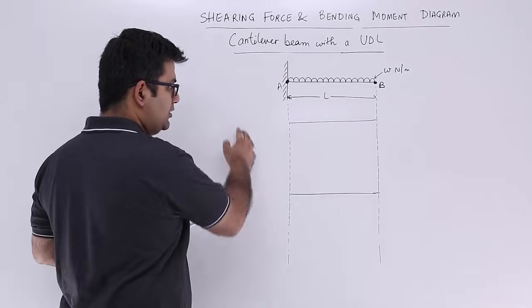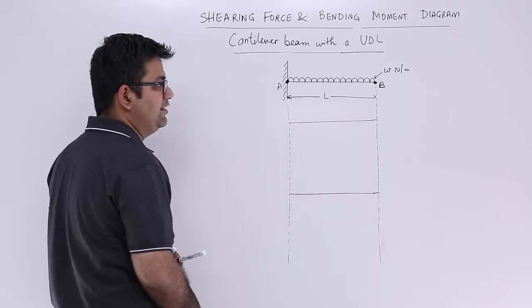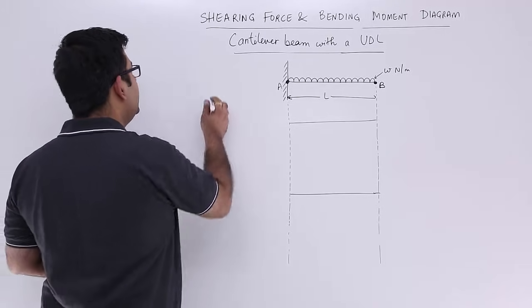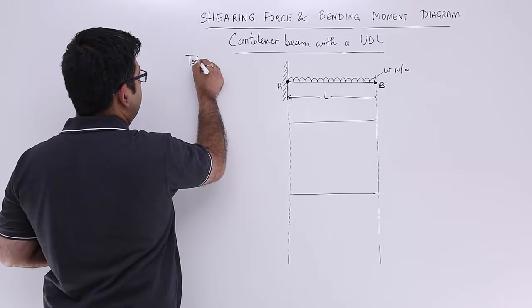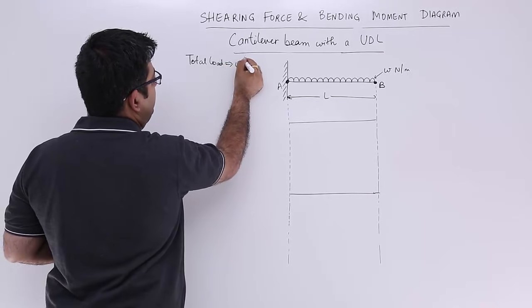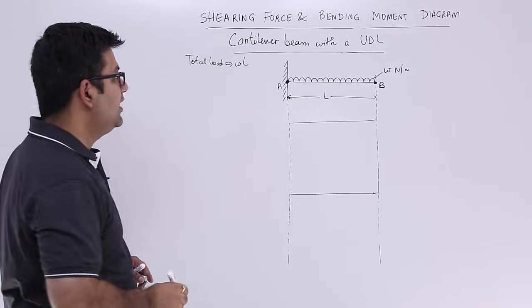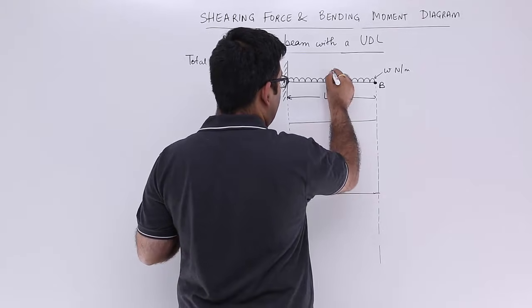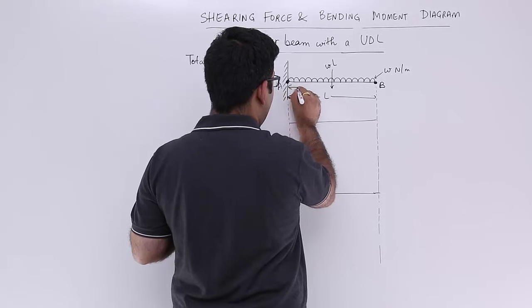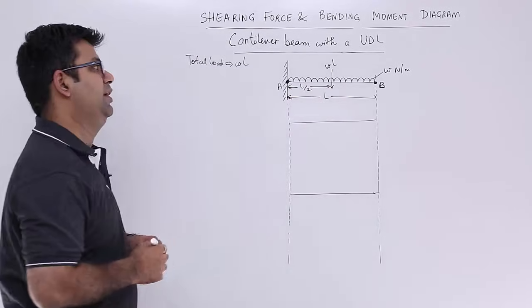After all the projections, we will draw the SFD and BMD just below this beam span only. The total load is equal to W into L, and this acts at the midspan, which is W into L acting at L by 2 from either side.